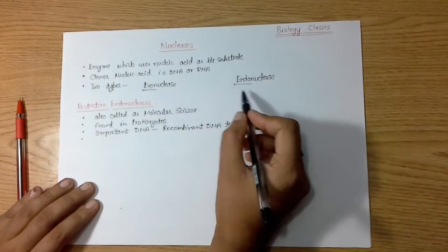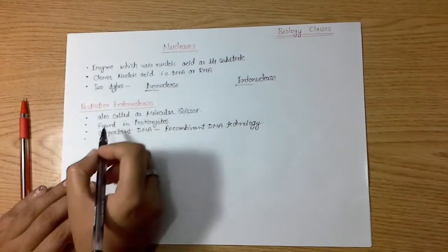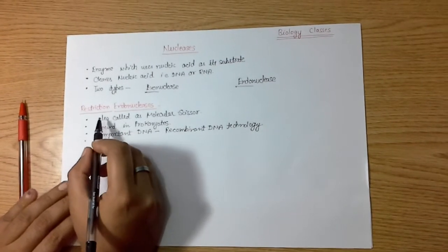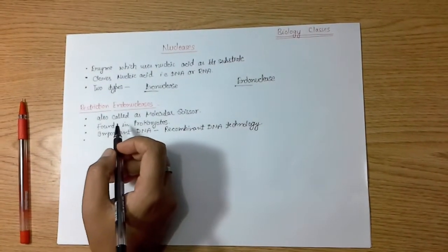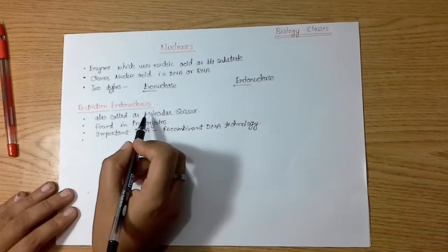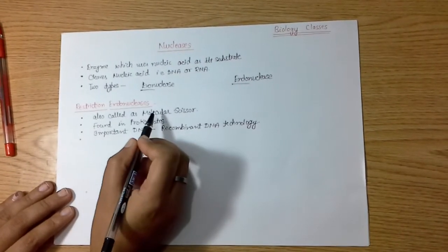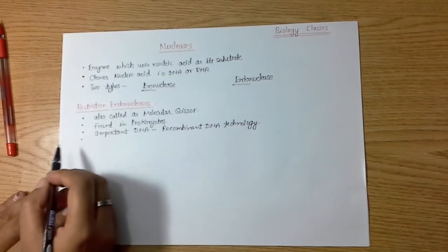Further, we have a group of enzymes that is very important from the point of view of recombinant DNA technology, named the restriction endonucleases.